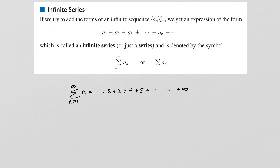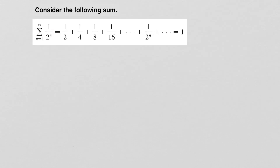So does it ever make sense to add up infinitely many numbers? Well, indeed it does. If we look at the sum n equals 1 to infinity of 1 over 2 to the n, we get 1 over 2 plus 1 over 4 plus 1 over 8 plus 1 over 16. And if we add this up indefinitely, we can show that the sum of this series is equal to 1.